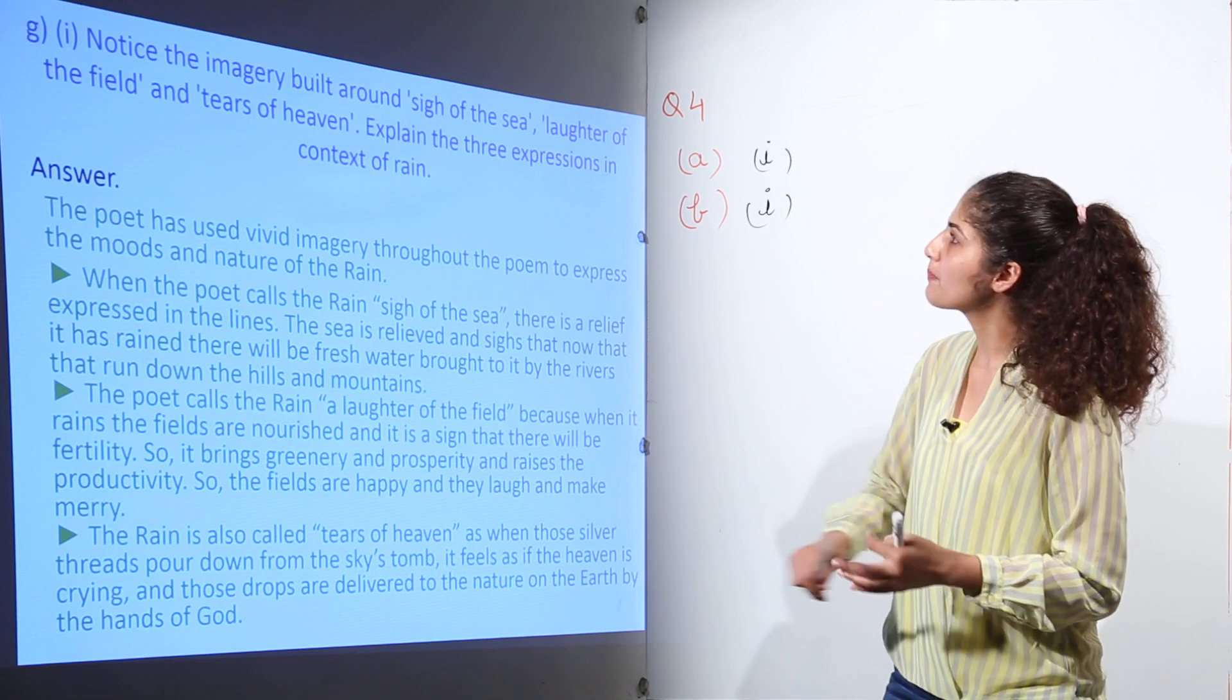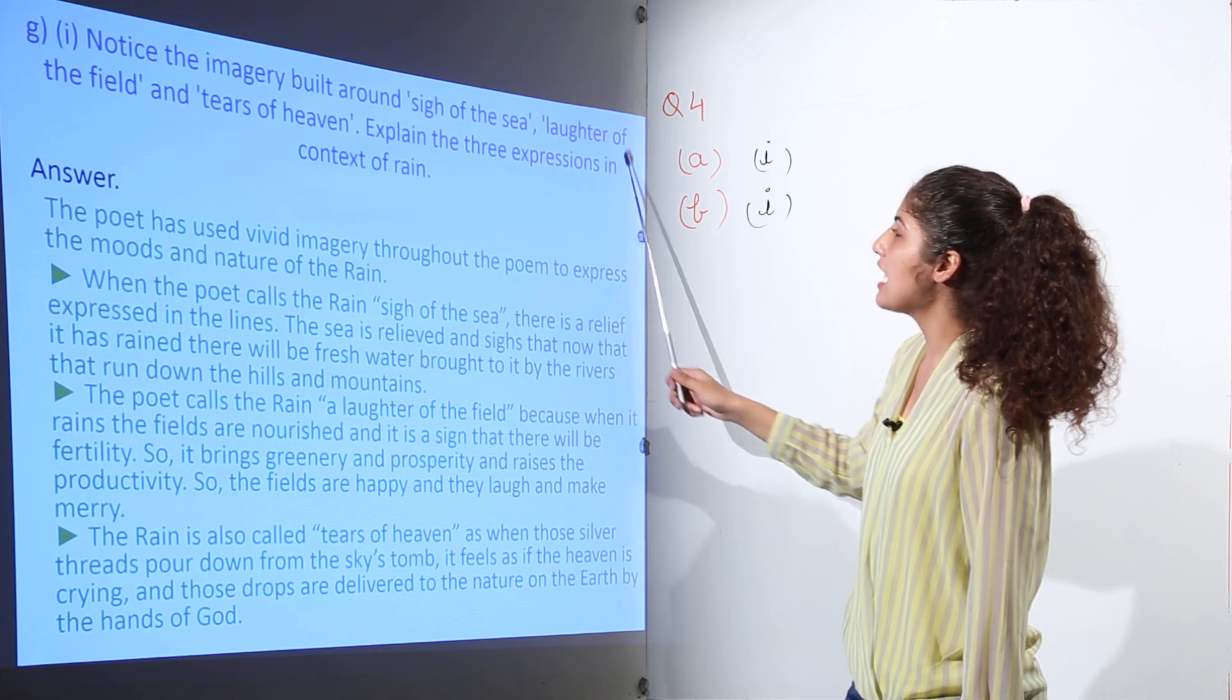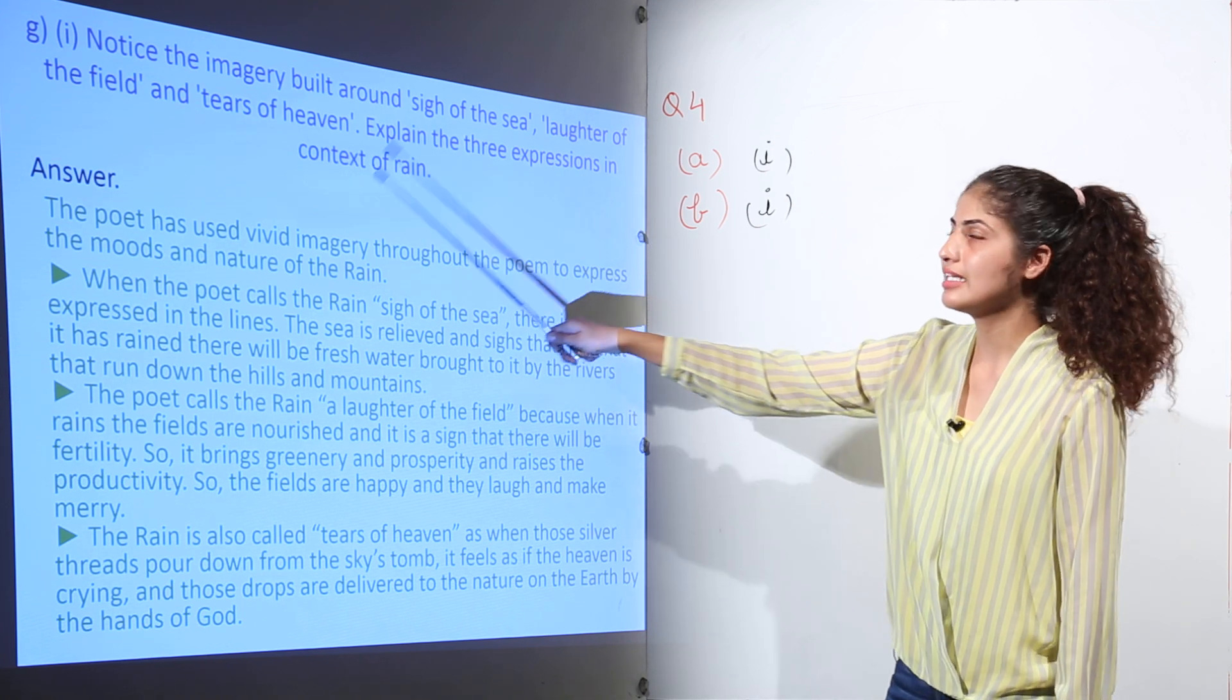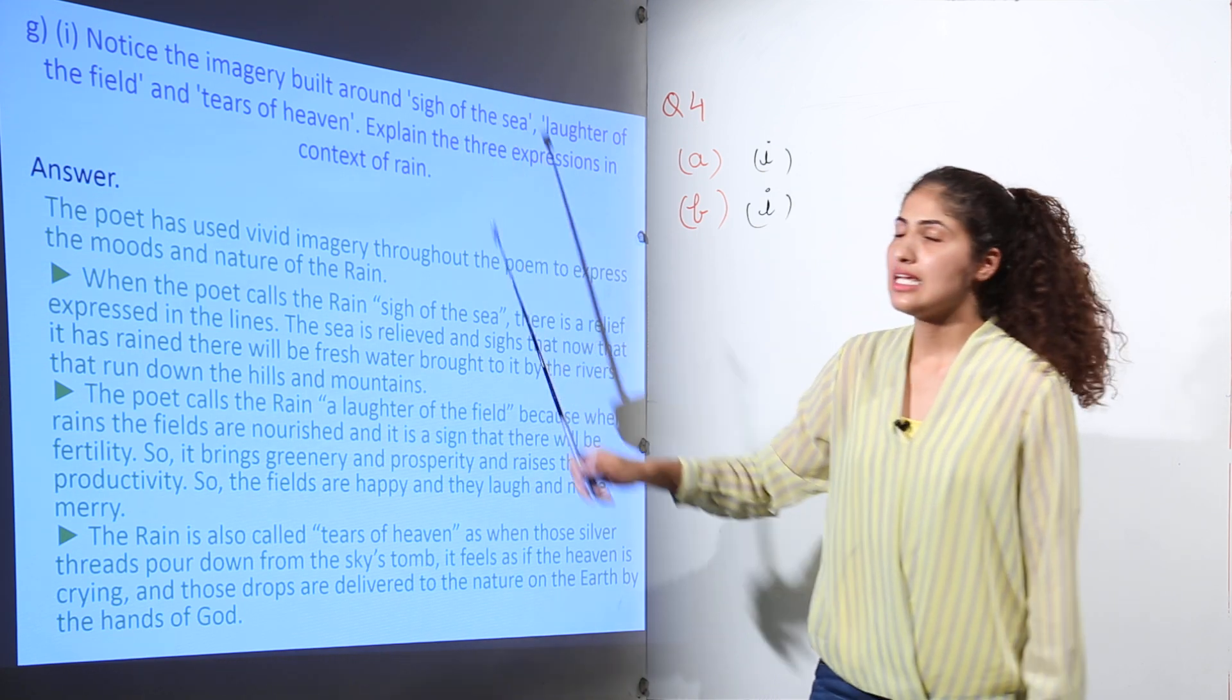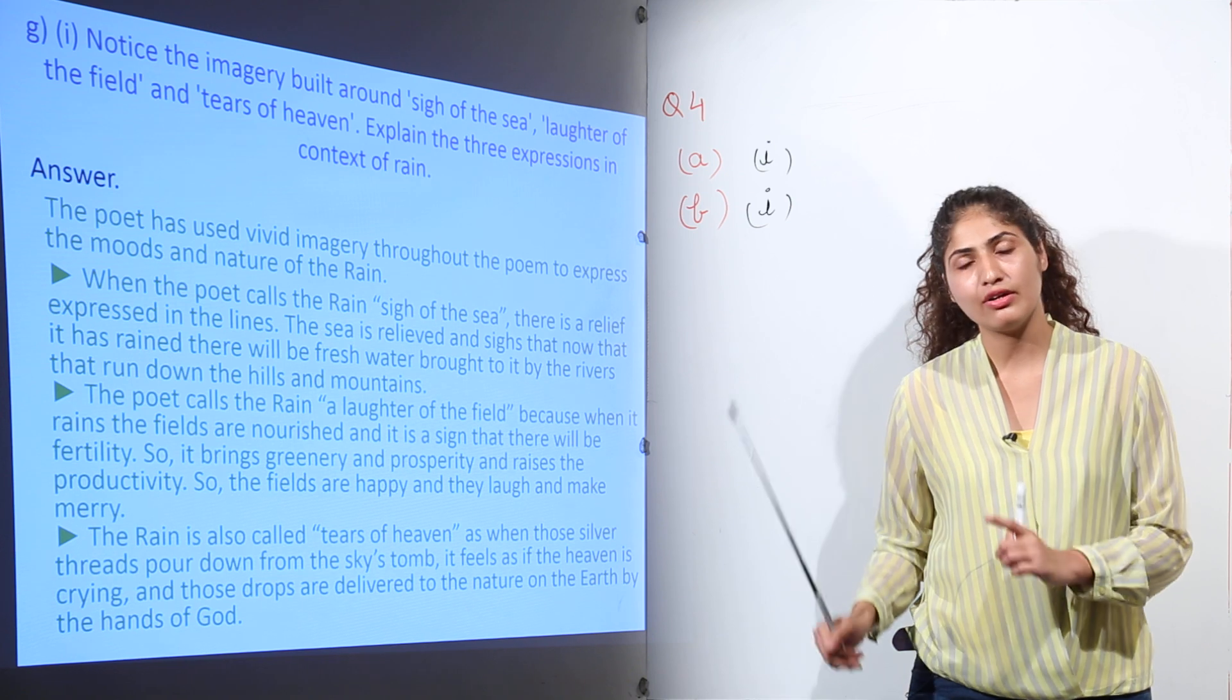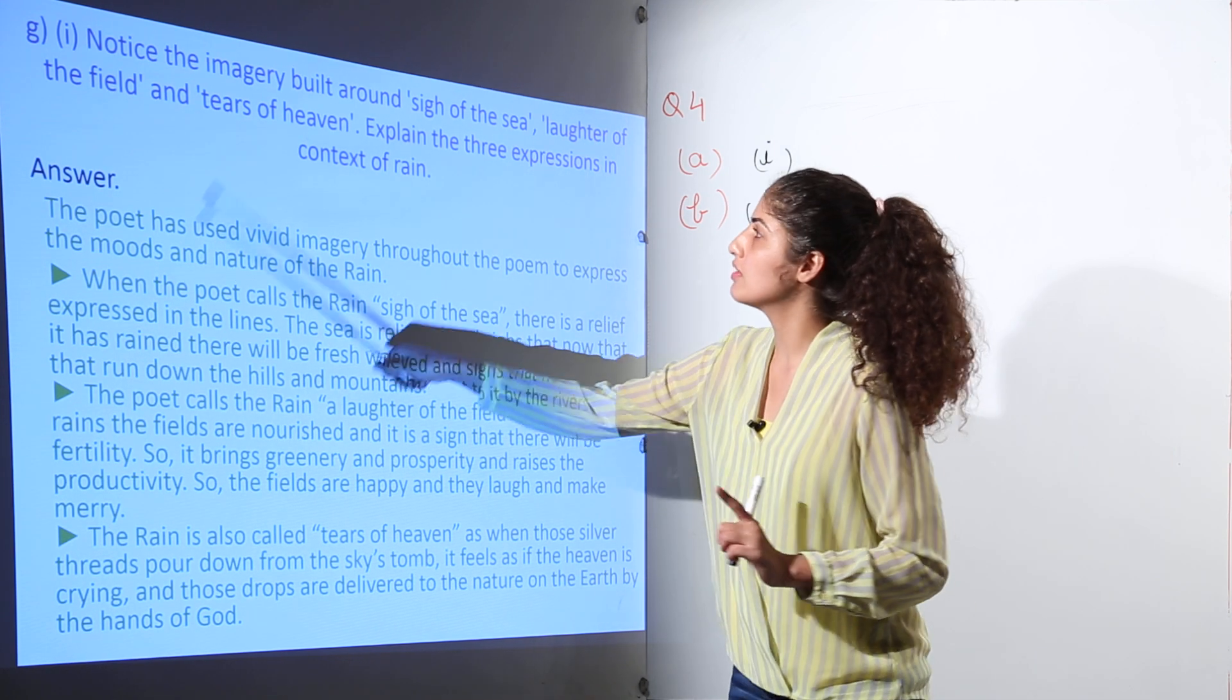Next question: Notice the imagery built around sigh of sea, laughter of the field, tears of heaven. Explain the three expressions in context of rain. When it says sigh of the sea, sigh means deep breath. So it refers to the beginning of the life of the rain, that is from the depth of the sea. Laughter of the field, that means that now the rain is the reason for field to enjoy,